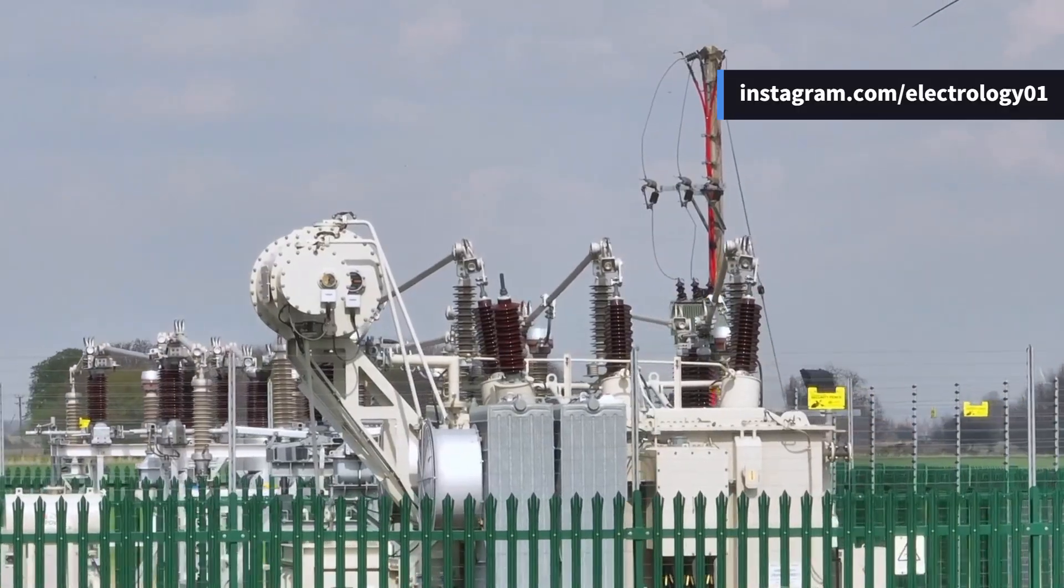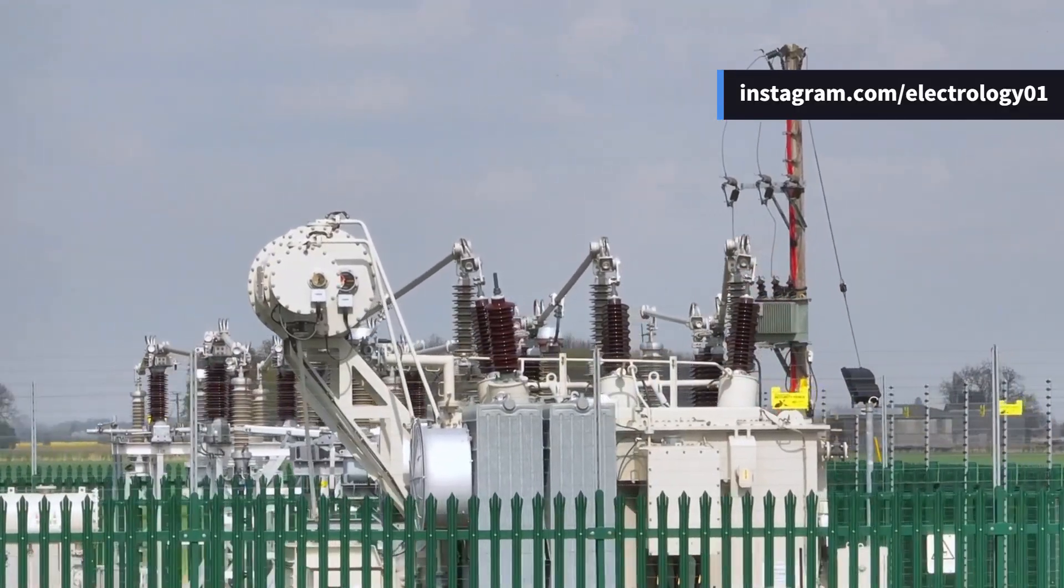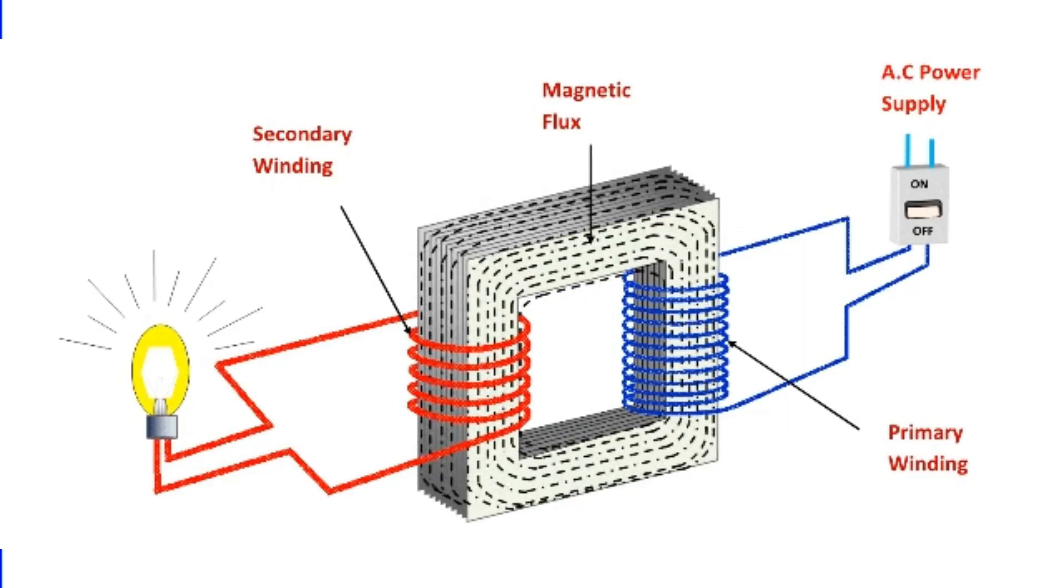First, let's understand what overfluxing means. A transformer is designed to operate at a specific magnetic flux level in its core. If this flux exceeds a certain limit, the core losses increase, leading to overheating and potentially causing internal faults. This is where overflux protection comes into play. It safeguards the transformer core from damage due to excessive flux.